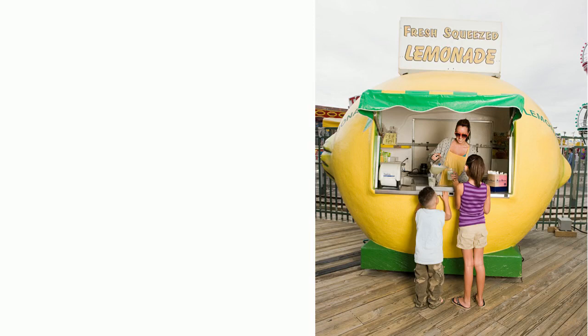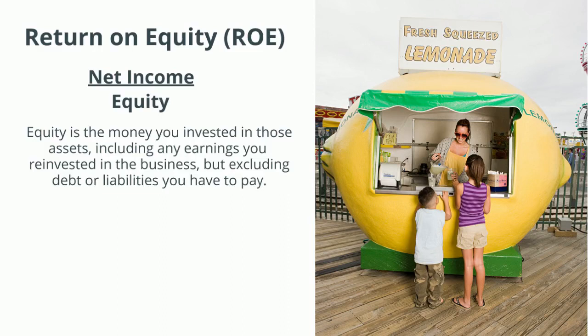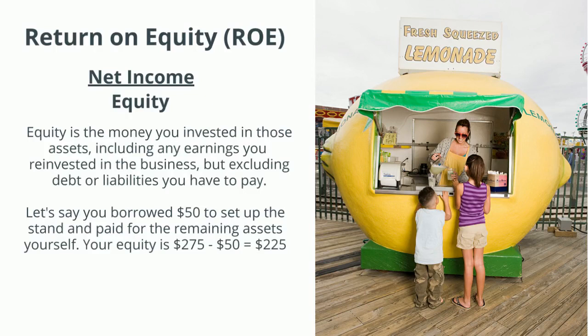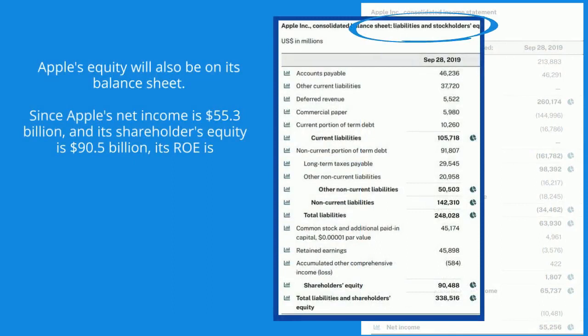Now let's do return on equity, or ROE, measured as net income over equity. Equity is the money you invested in assets, including any earnings reinvested, but excluding debt or liabilities. If you borrowed $50 to set up the stand, your equity is $275 minus $50, or $225. Your ROE is $100 over $225, which is 44.4%. Apple's shareholders' equity is $90.5 billion, so its ROE is 61.1%.